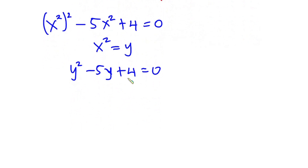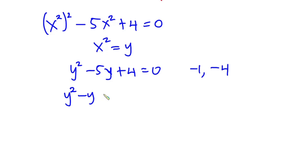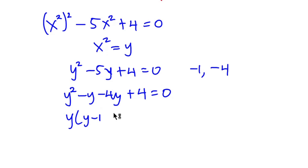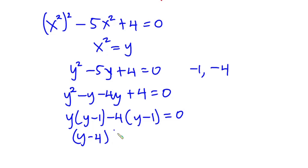From here, we look for two numbers that when multiplied give positive 4, and when summed give negative 5. Those numbers are negative 1 and negative 4. So the equation becomes y squared minus y minus 4y plus 4 equals zero. We factor y from the first two terms to get y times (y minus 1), then negative 4 times (y minus 1), equal to zero. So the factors are (y minus 4)(y minus 1) equals zero.